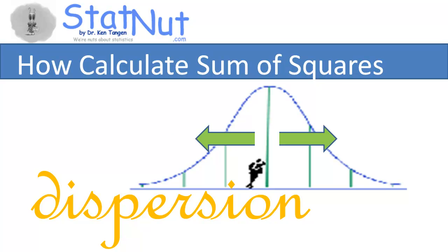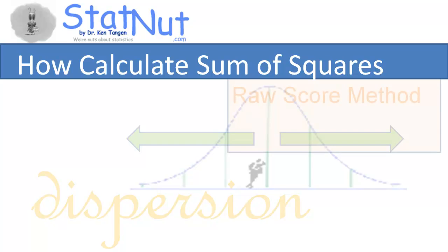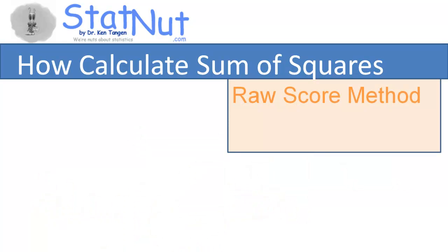But once you have the idea that sum of squares is a measure of dispersion, move on to the raw score method. It's so much easier.